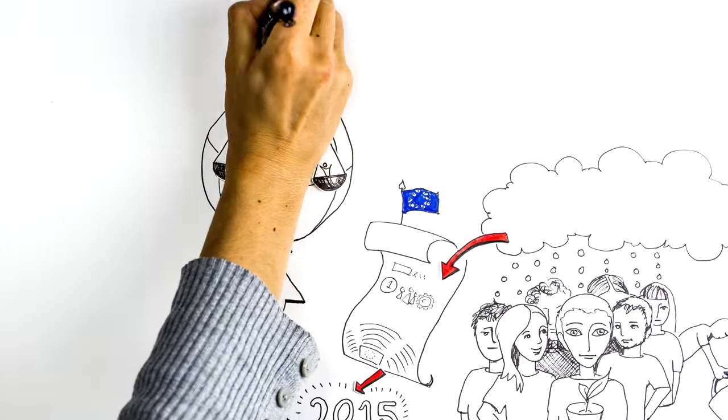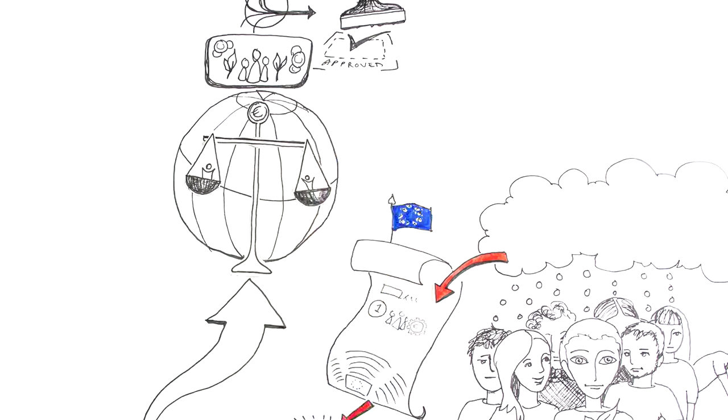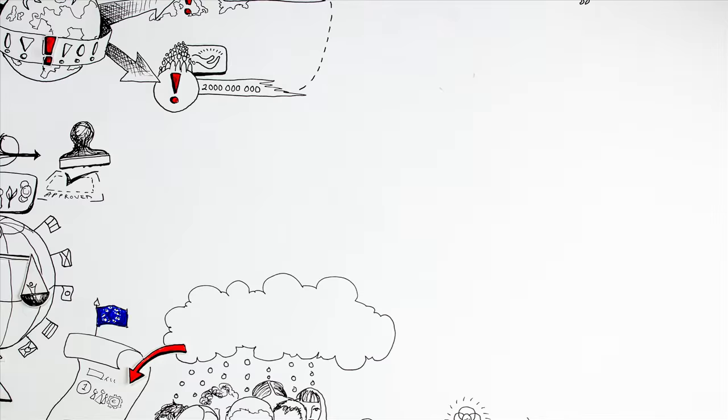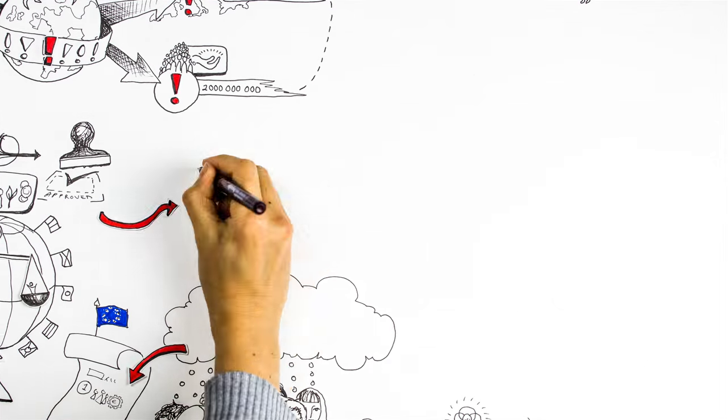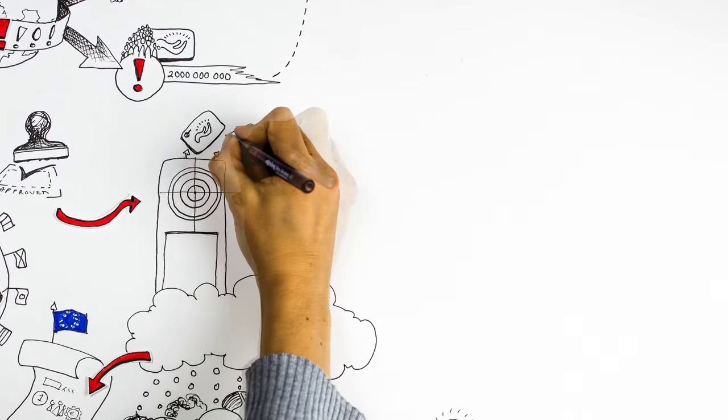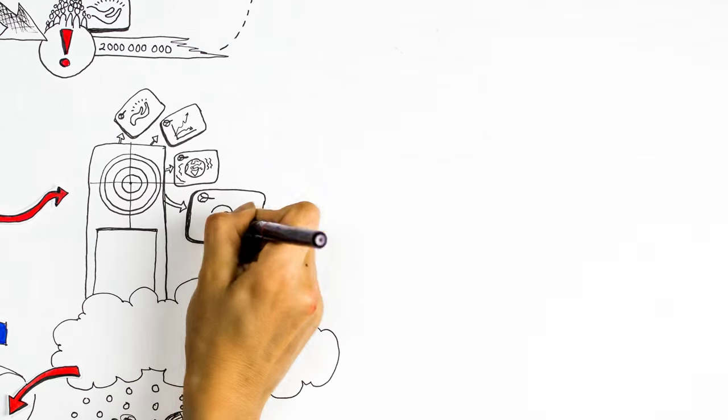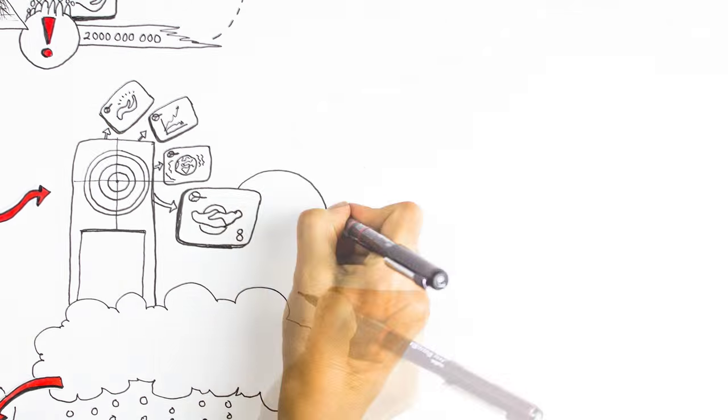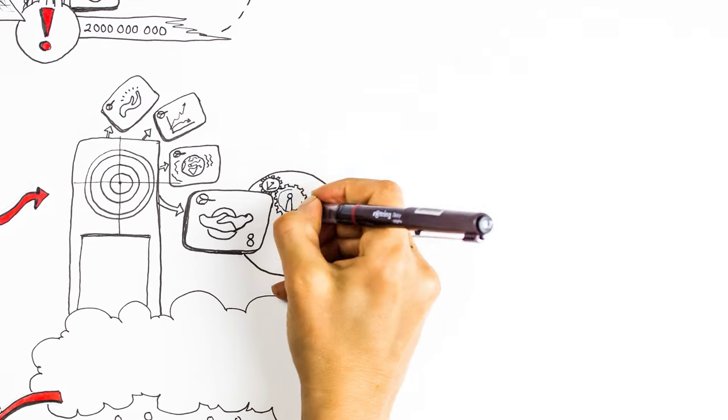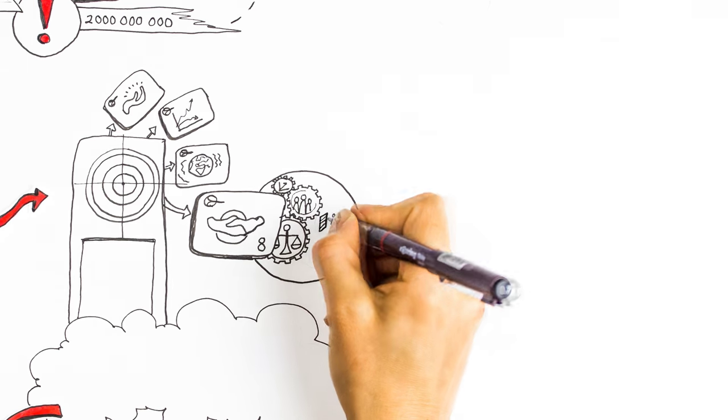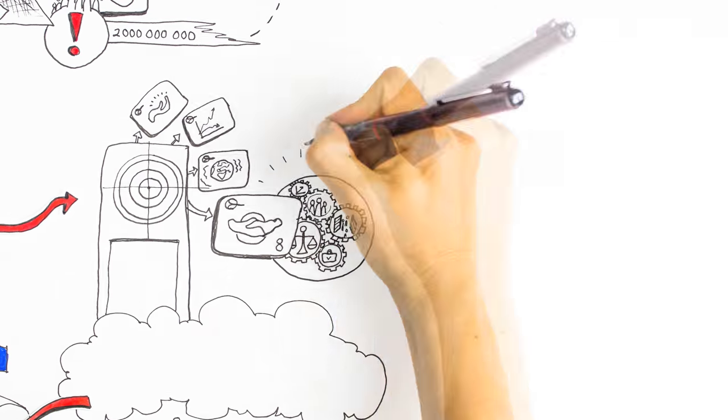These global goals are a set of targets identified by governments and civil society across the world that will affect how we tackle issues like poverty, inequality and climate change for years to come. Goal 8 aims to promote a sustained, inclusive and sustainable economy, full and productive employment and decent work for all.